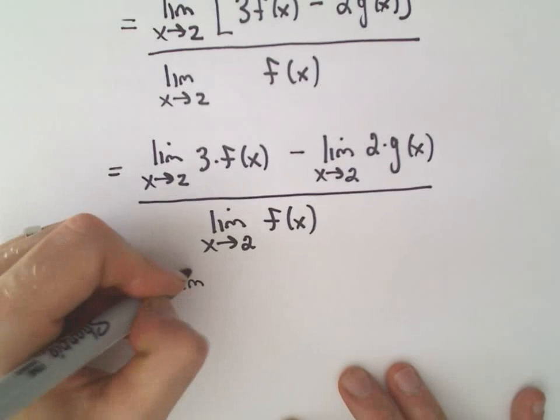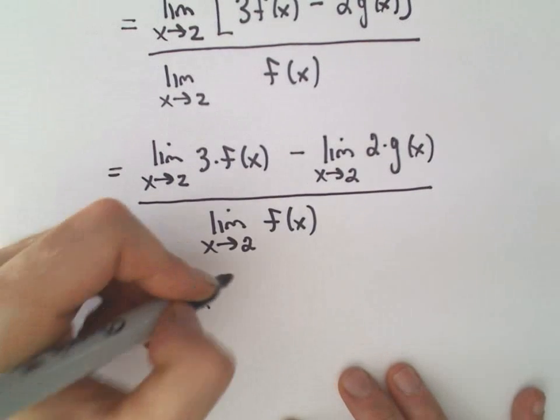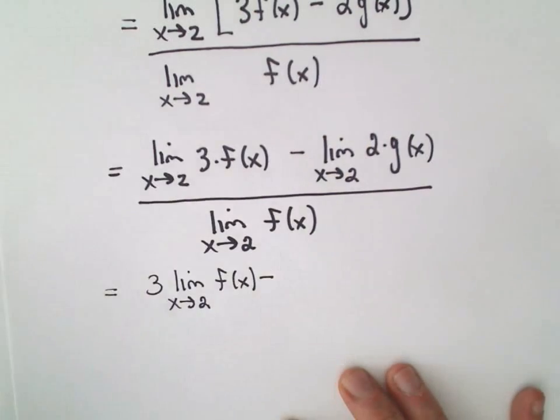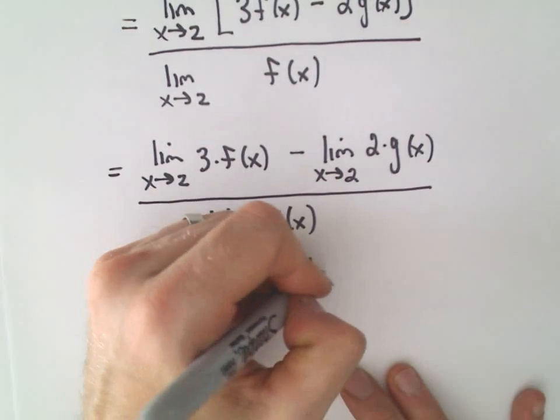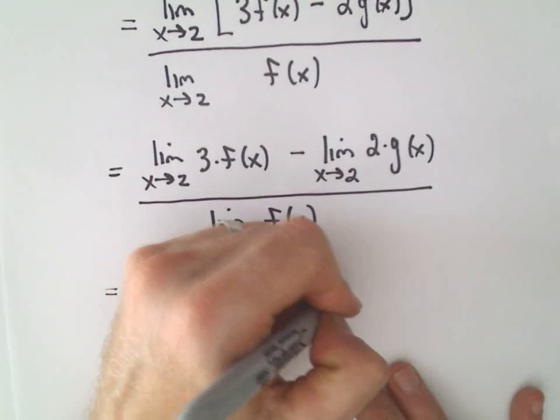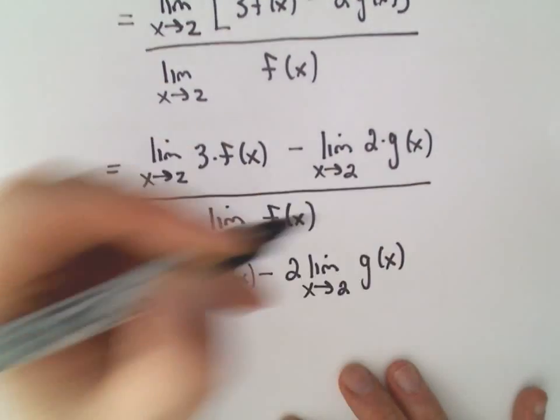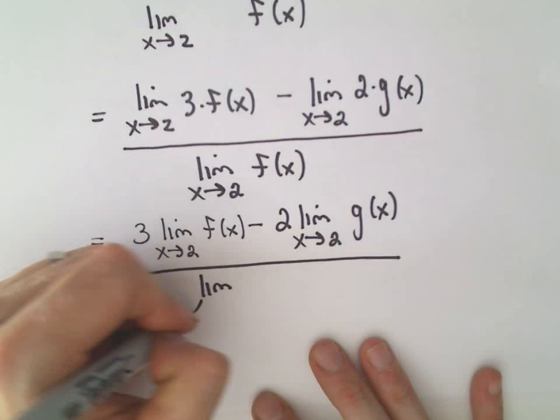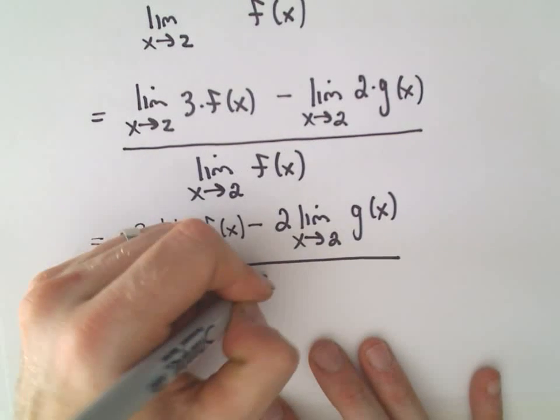We have 3 times the limit as x approaches 2 of the function f of x minus, I'm going to pull the 2 out front, 2 times the limit as x approaches 2 of g of x. All of that is over the limit as x approaches 2 of f of x.